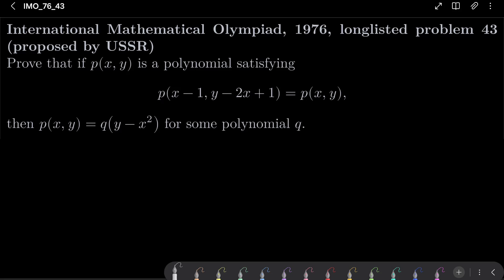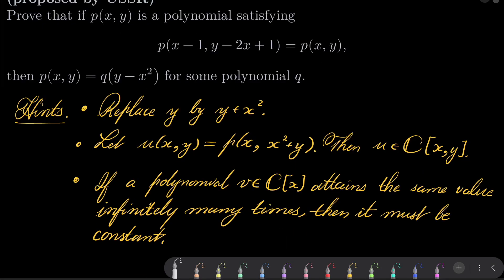So here are my hints for this problem. First, replace y by y plus x squared in our functional equation, and now consider u of (x, y) to be p of (x, x squared plus y). Notice that u is a polynomial in two variables with complex coefficients — let's work in complex numbers. Notice that if a polynomial v in one variable attains the same value infinitely many times, then it must be constant, because any polynomial can have only finitely many roots. That should be enough, so give this problem a try.